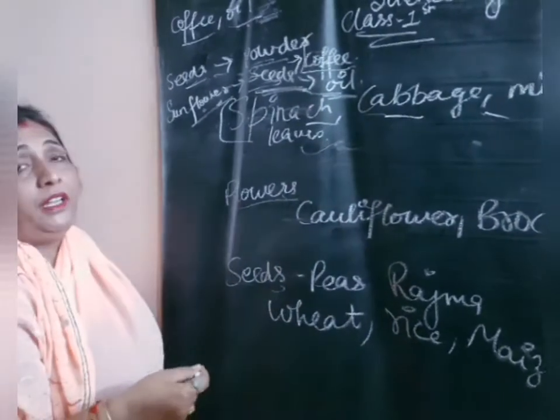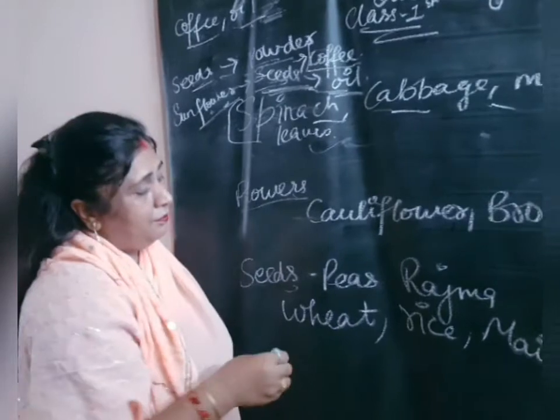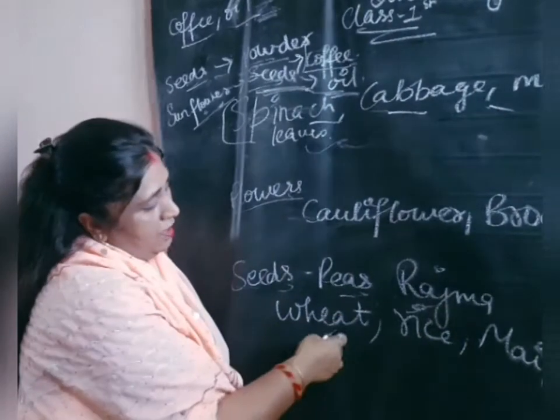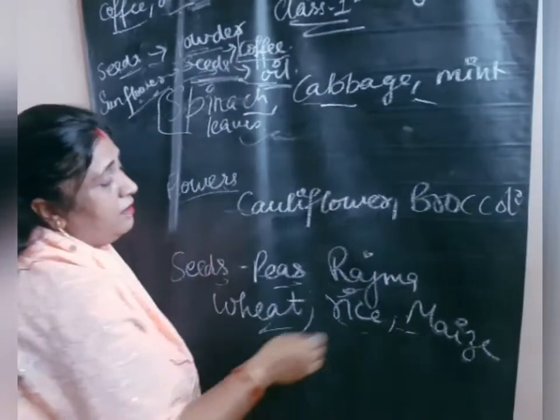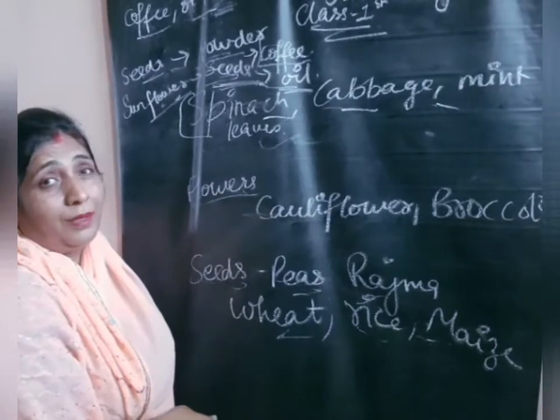Seeds. We eat the seeds of some plants. Peas, rajma, rice and maize are the seeds of a plant.